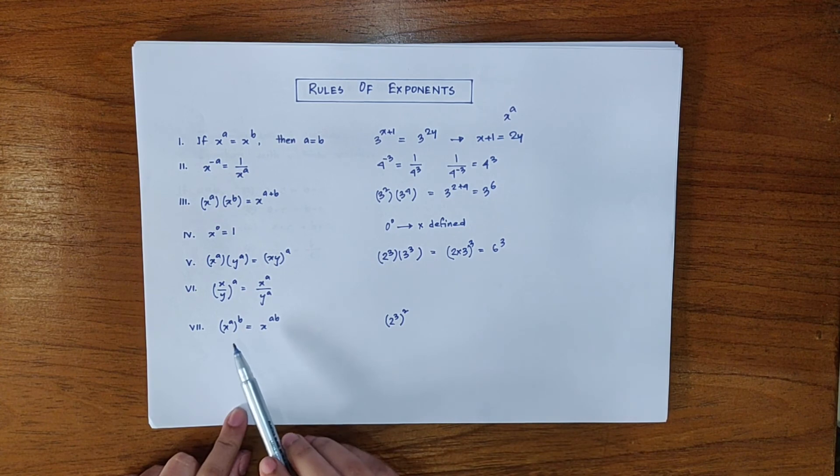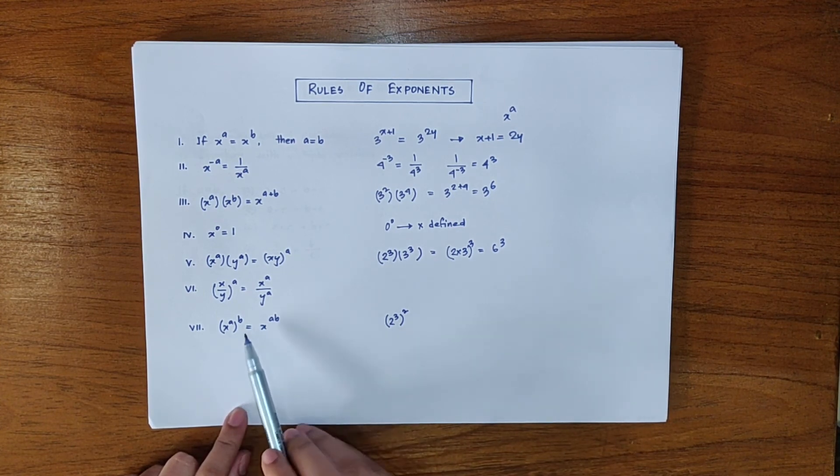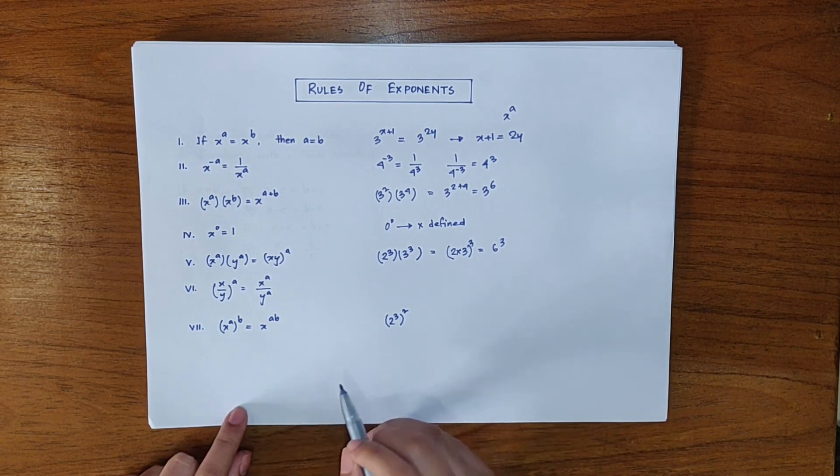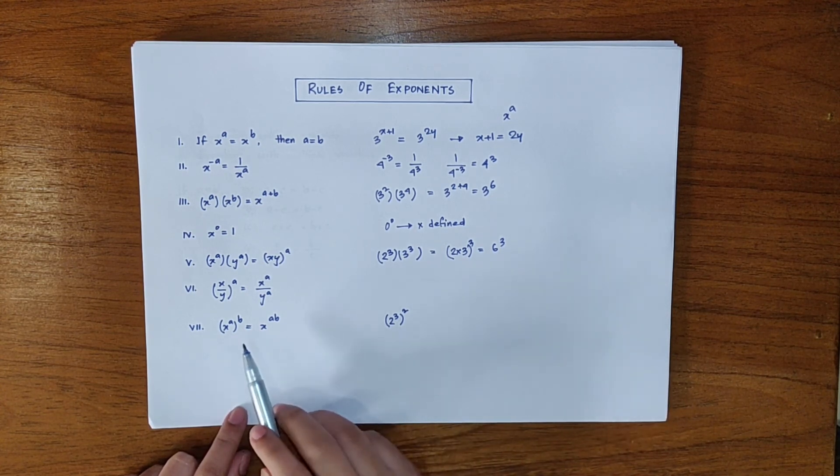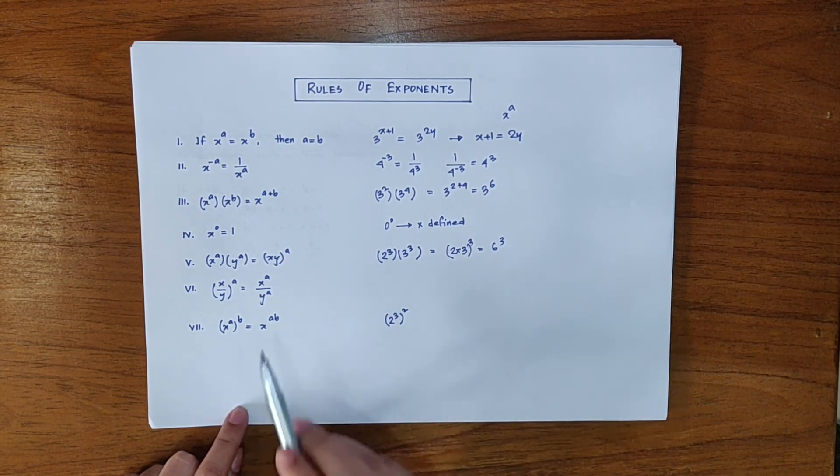And final rule that we have is x to the power a to the power b is equal to x to the power ab. If x to the power a is raised to another exponent b then a and b are multiplied.